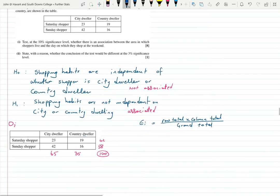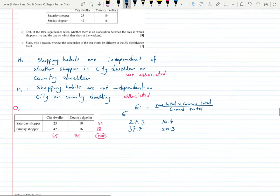If we work that out for this cell, for Ei we're going to get 42 times 65 divided by 100 which is 27.3, and 35 times 42 divided by 100 which is 14.7, and then 65 times 42 divided by 100 that's 37.7, and 35 times 58 divided by 100 which is 20.3. So these are my expected frequencies.